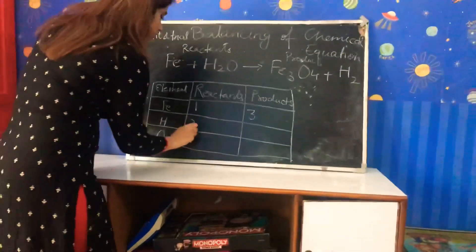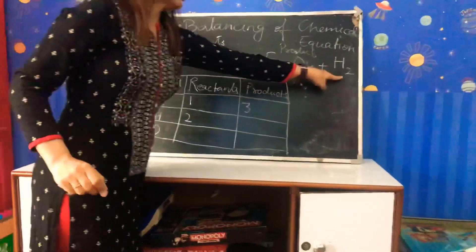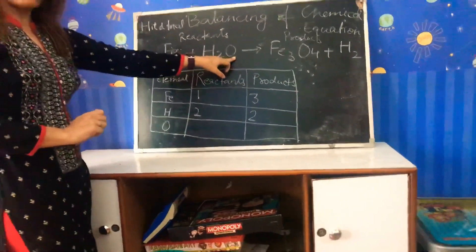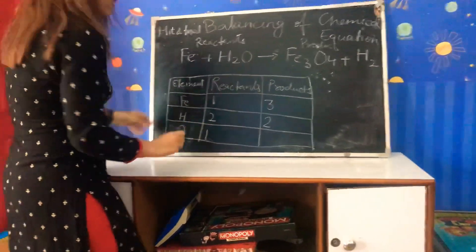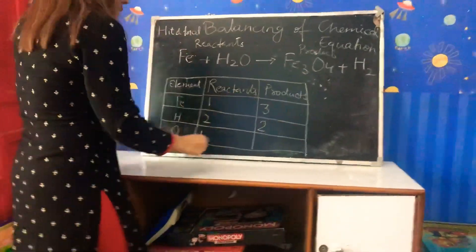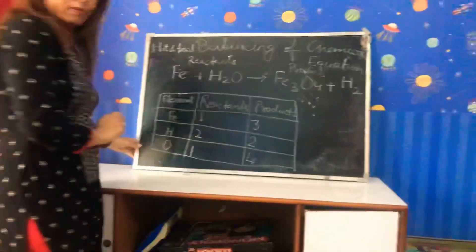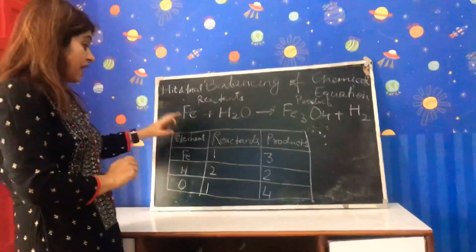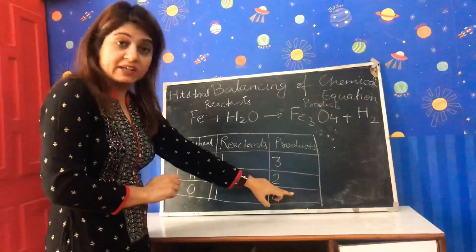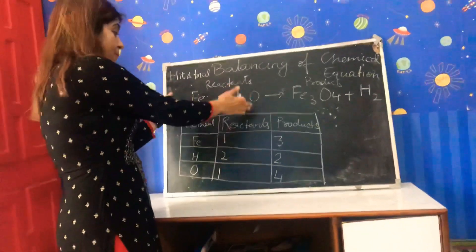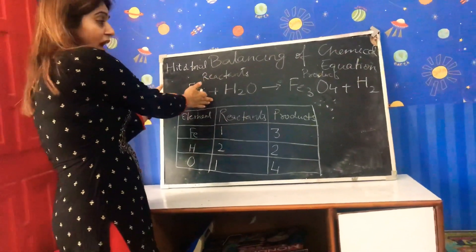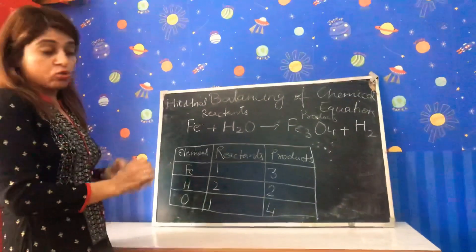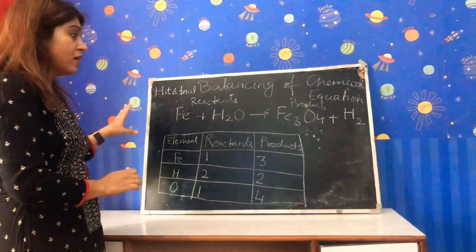What about hydrogen? In the reactants we have two hydrogen atoms, and in the products we also have two hydrogen atoms — so hydrogen is already balanced. What about oxygen? In the reactants, oxygen is one, and in the products, oxygen is four. So we need to change the numbers so that the number of elements in the reactants equals the number in the products, making it a balanced chemical equation. Right now it is an unbalanced chemical equation.